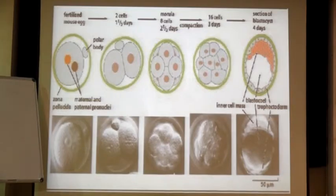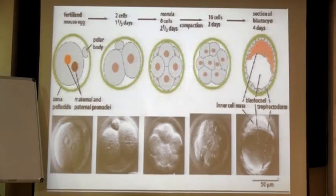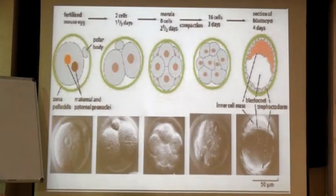When you do the fusion of gametes, you have the formation of a fertilized egg which is what is called the zygote. In this slide you can see a fertilized mouse egg — these are the two pro-nuclei which will actually be fusing up so that they will generate the further processes related to development. Fertilization can also be of two main types: internal fertilization and external fertilization, depending on the type of animal.